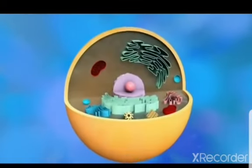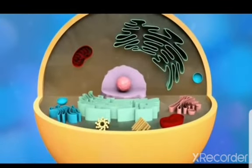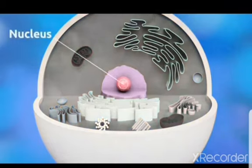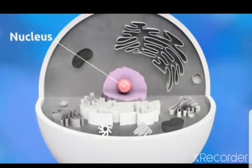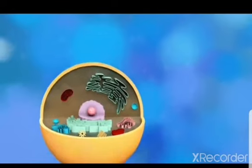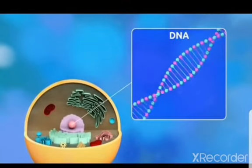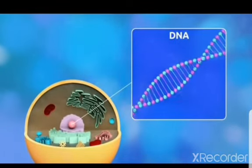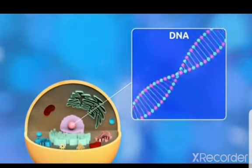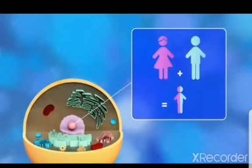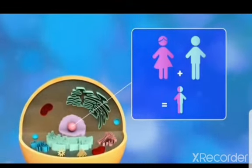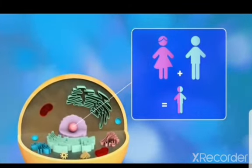When we see deep inside the animal cell, we see a very prominent part that is called the nucleus. Nucleus is made up of genetic material that is called DNA. DNA is made up of protein and controls the heredity characters that can pass from parent to offspring.